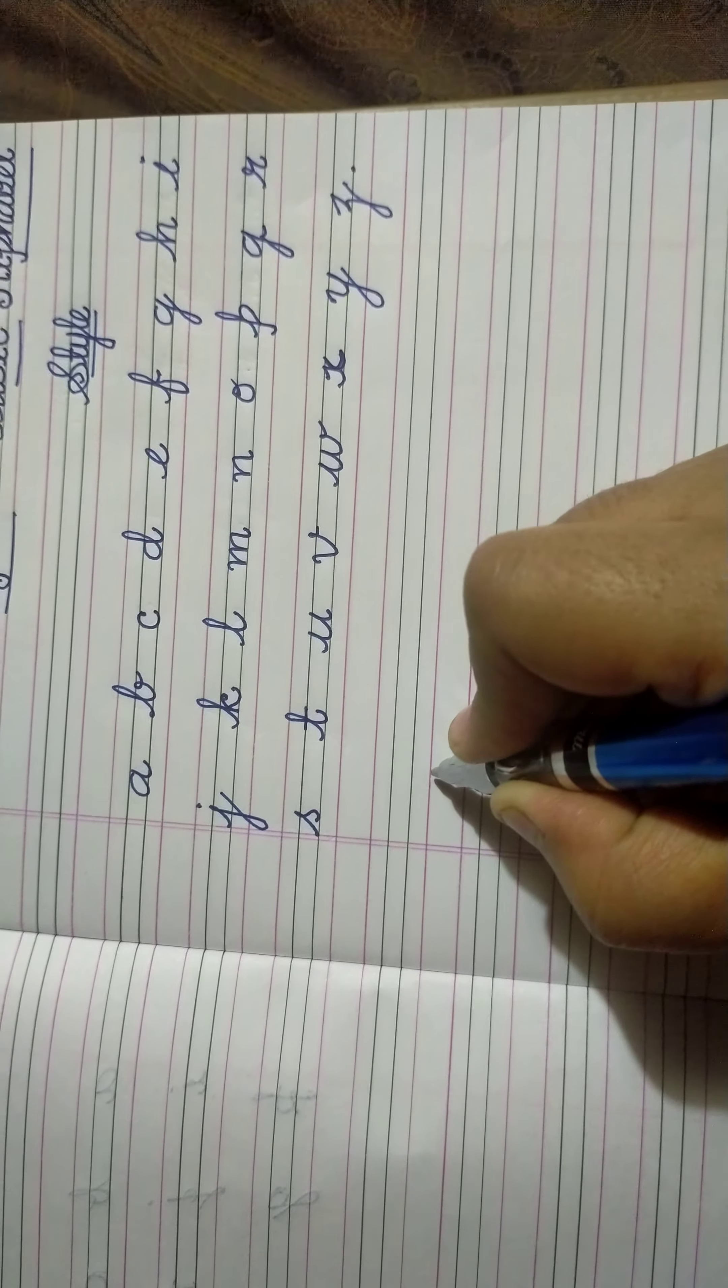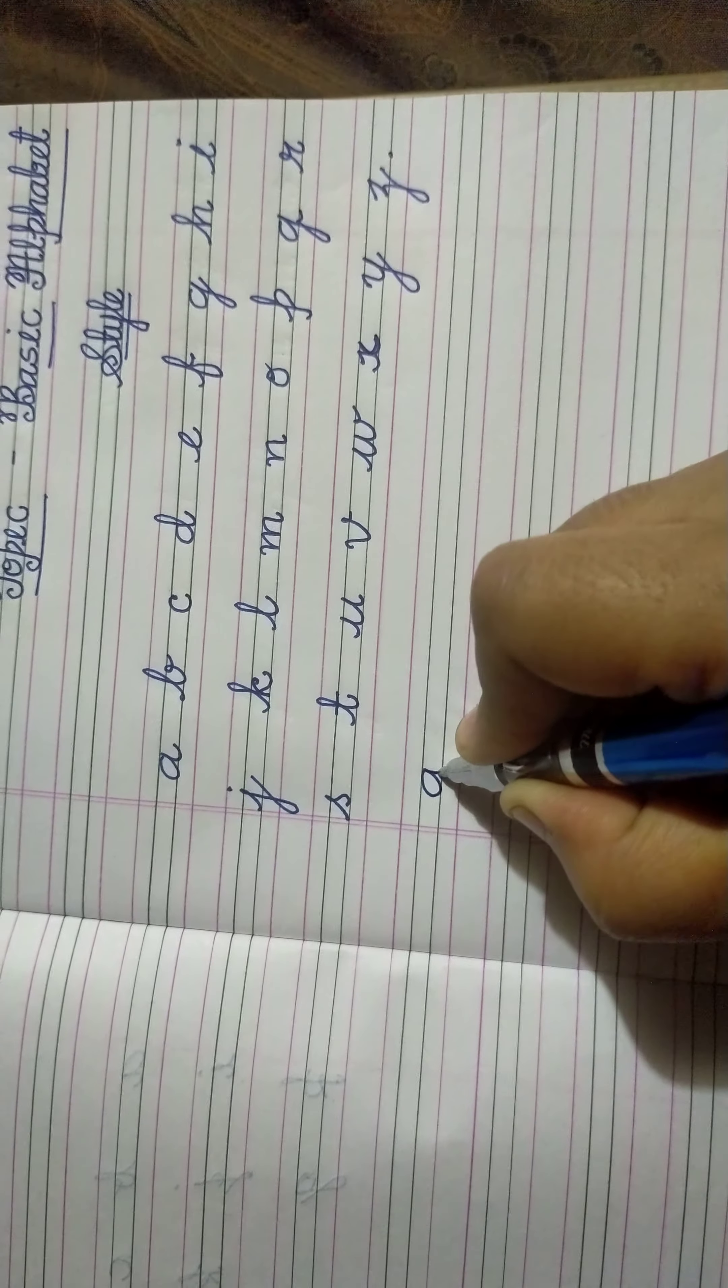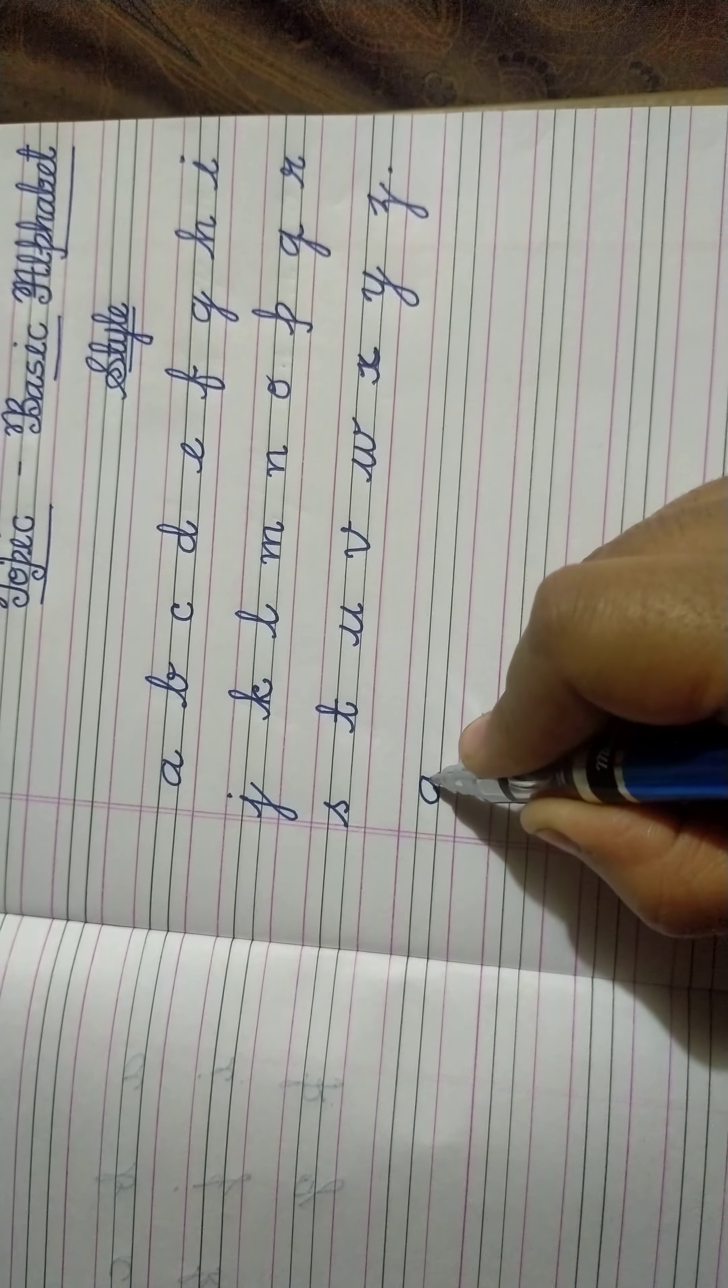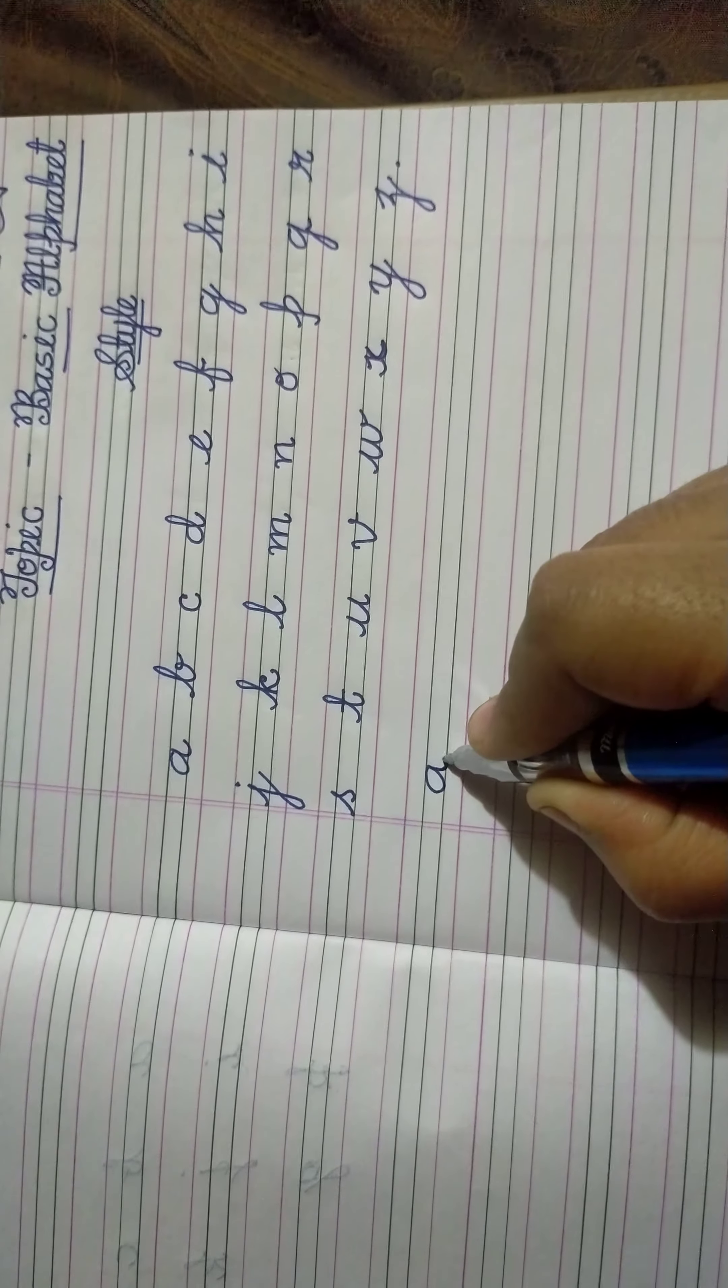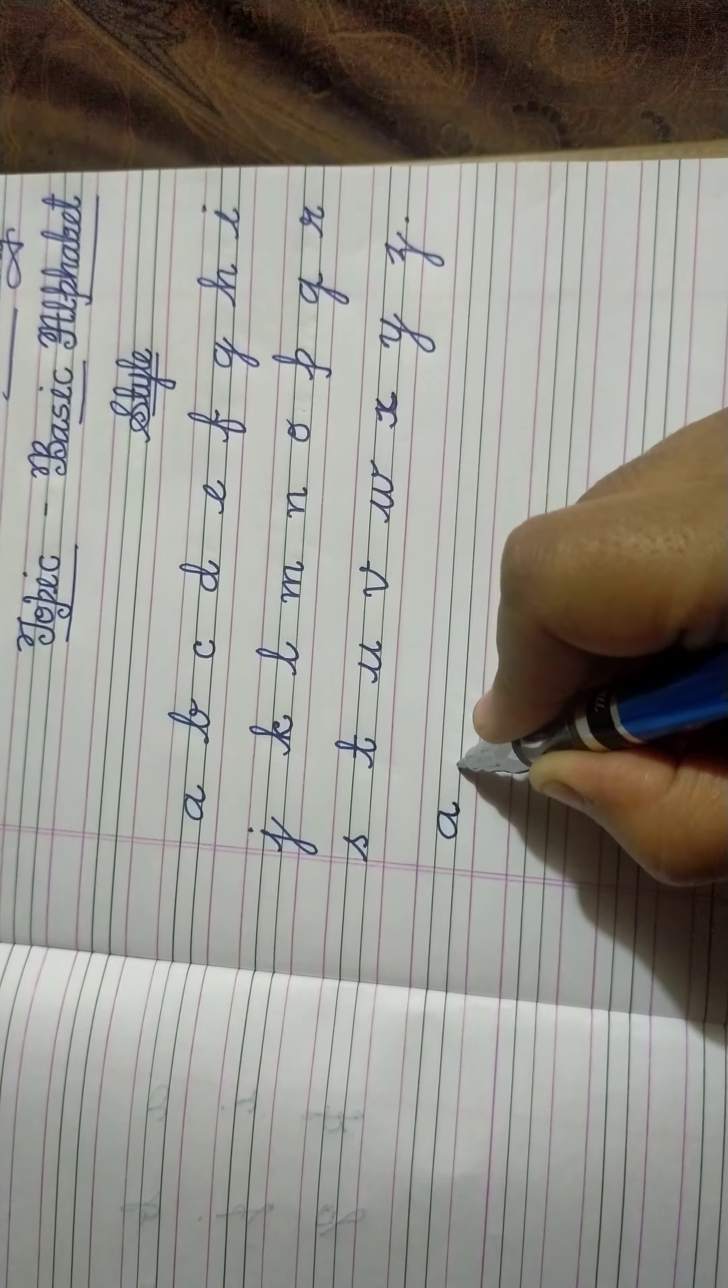So let's start with A. A is a normal oval with a curve. Second, B. How do we write a B? For B, we are utilizing three lines again.